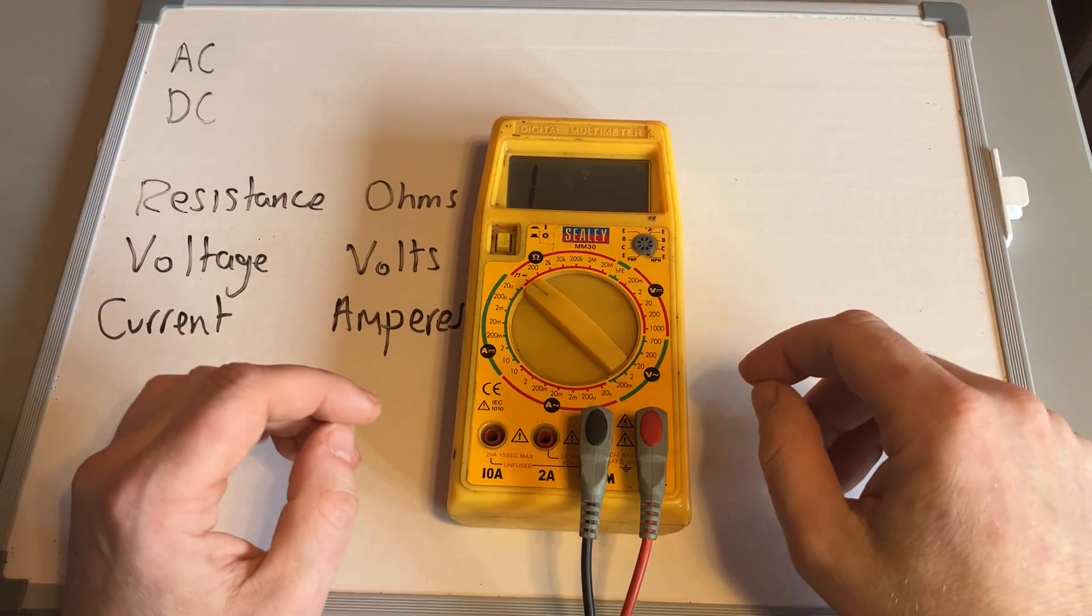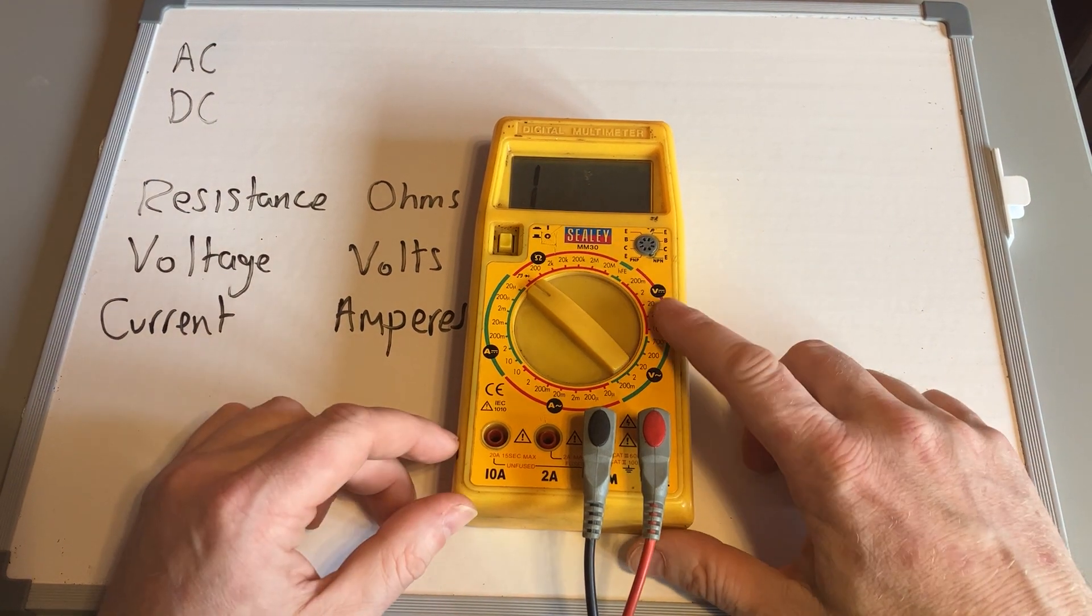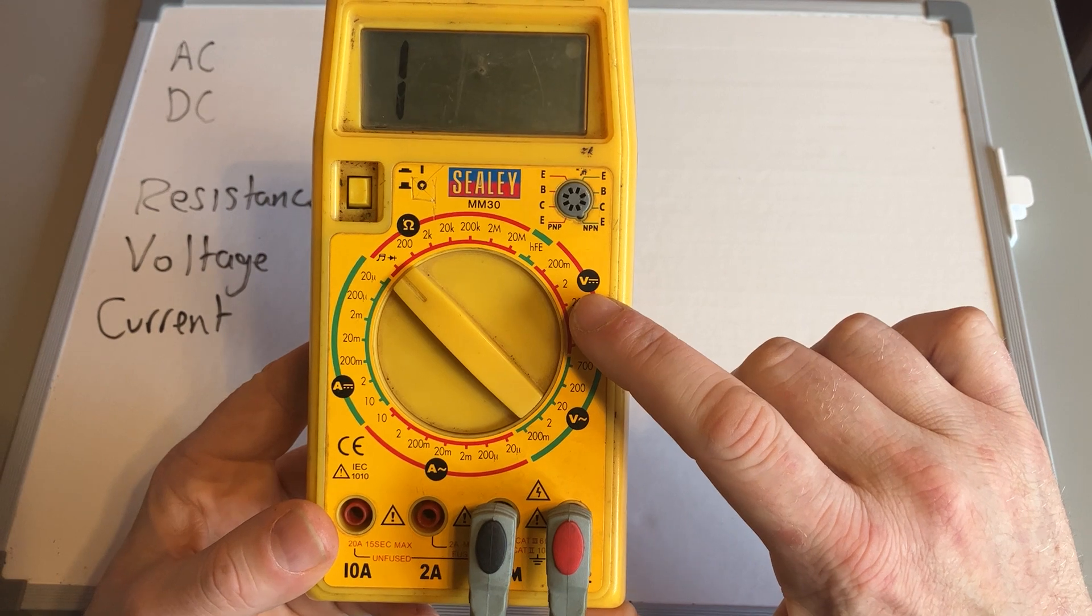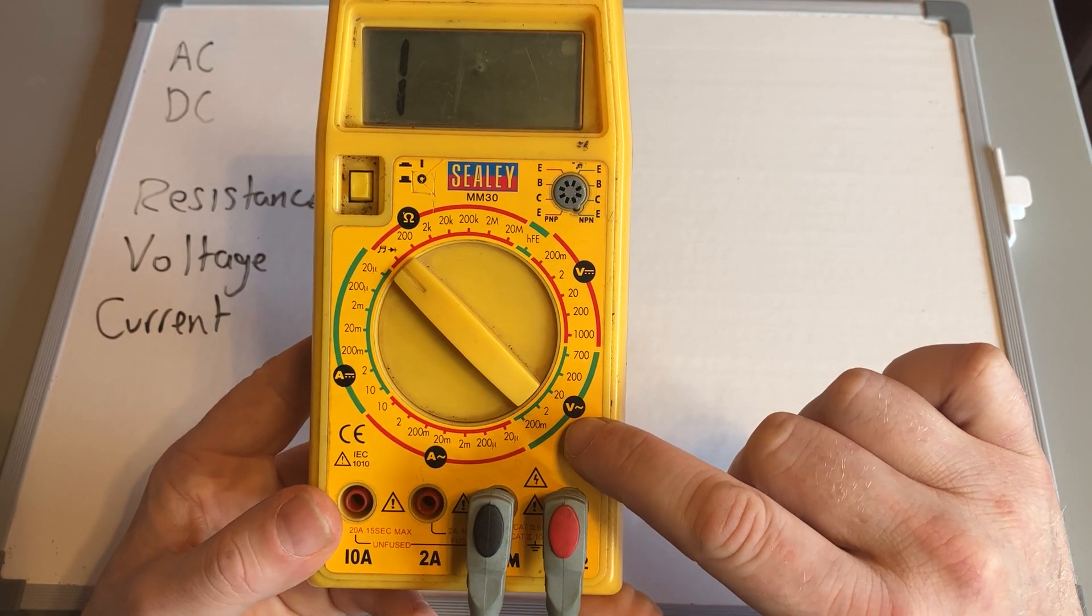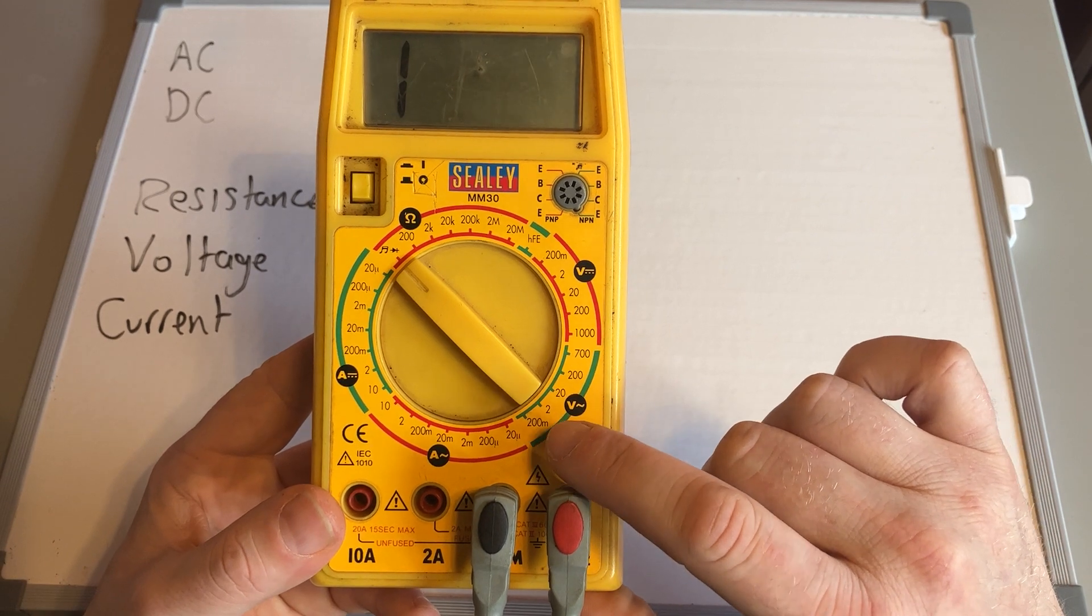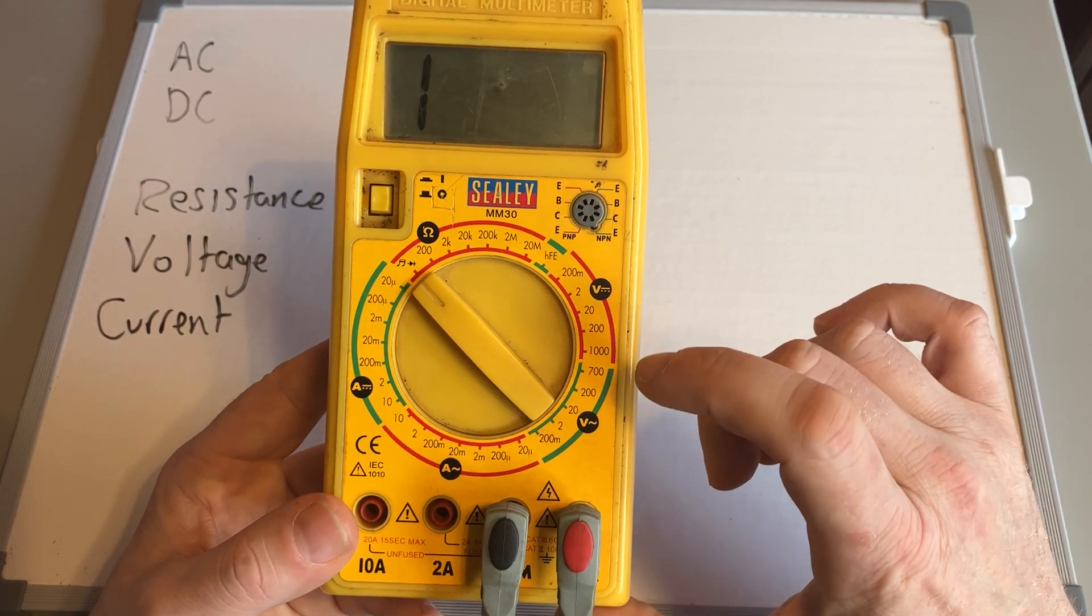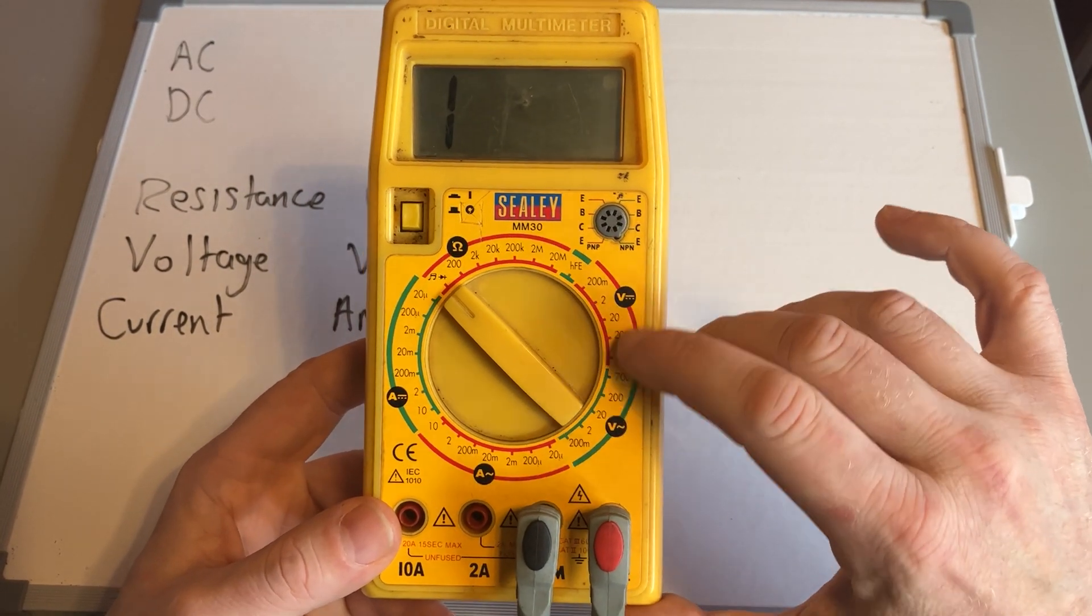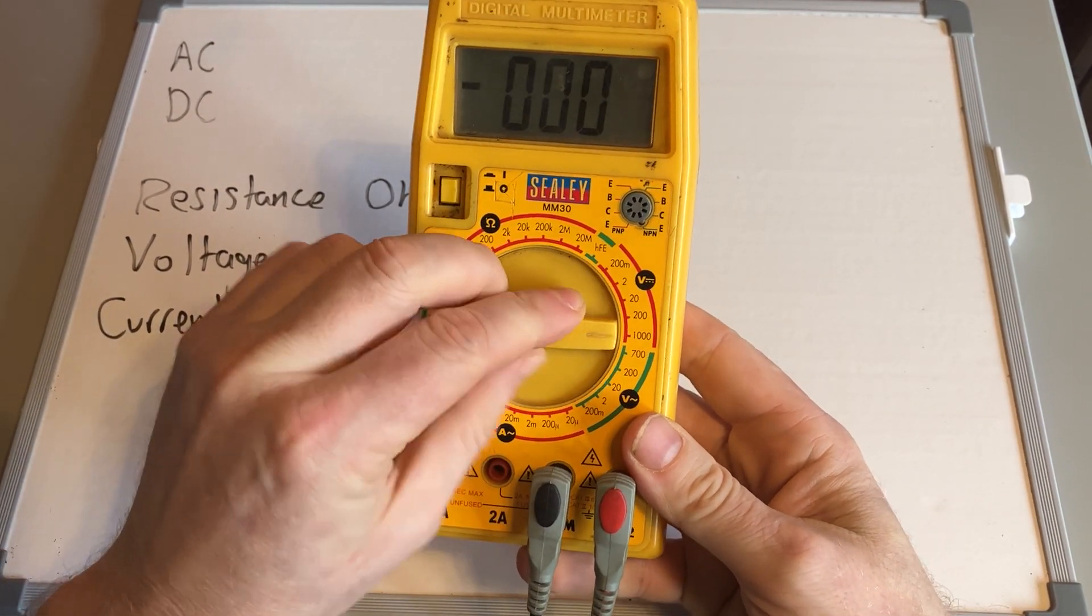That's the ohm setting for resistance. The next one is volts, obviously voltage measured in volts. On your multimeter you'll have two different ones: a straight line with some dashes underneath is DC, and the wavy line is alternating, so that's AC. If you were working on finding how much current was coming to a plug in a house, you'd use this scale. If you're working on anything on a car really, or that comes off a DC battery, you'd use the DC scale.